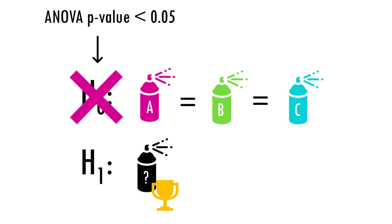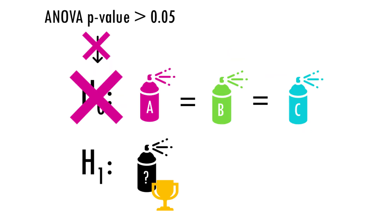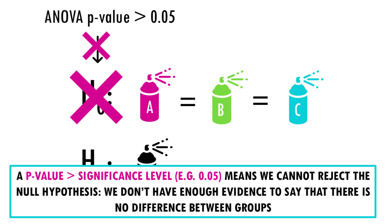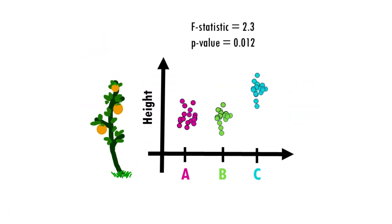There is a statistically significant difference in plant height among fertilizers. A large p-value means there's insufficient evidence to conclude that group means differ — with this data, we cannot say there's a difference in height; maybe we just need a bigger sample, but we cannot claim there is no difference. We got a p-value of 0.012, which is lower than 0.05, so we can say that there is a difference. At least one fertilizer had a different effect on plant height than the rest.